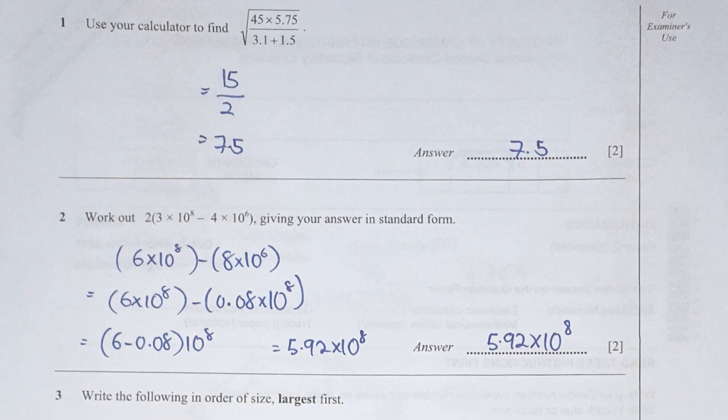For the first question, as mentioned by the question, just use your calculator to identify the answer. You should get 15 over 2, which is 7.5. Question 2 here, I multiplied the 2 into 3 and negative 4.